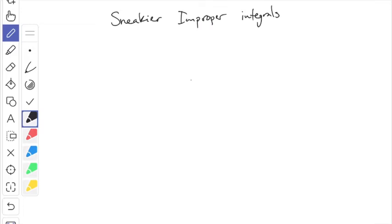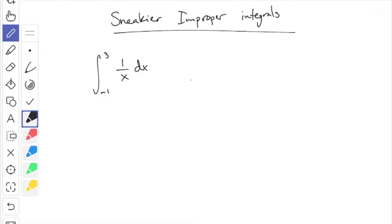Here is an example — it doesn't have infinities on it, that's why it's a little sneaky. This one does involve some kind of infinite-sized area, but it's not obvious just by looking at it. If you're not careful you might just do the integral without thinking about it as improper and get the wrong answer. What I'm about to write is not correct — you can write this down if you want, but it's wrong, and I'll explain why.